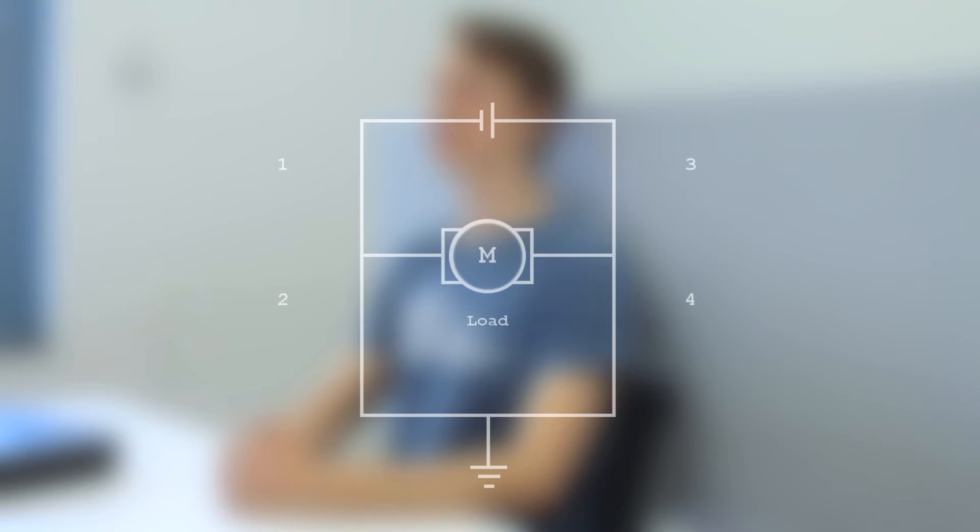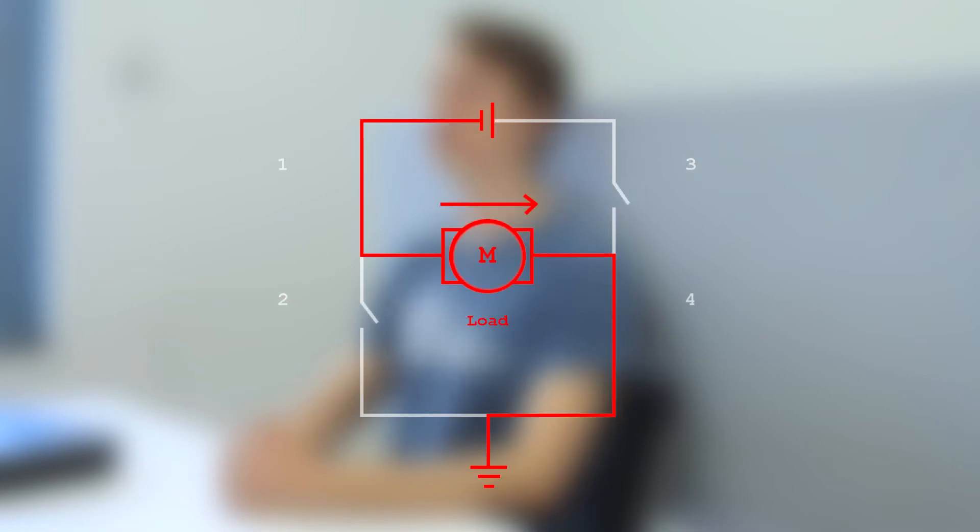By opening and closing the switches we can easily manipulate the flow of current through the load. Closing switches one and four while keeping switches two and three open leads to the current flowing through the load from left to right.